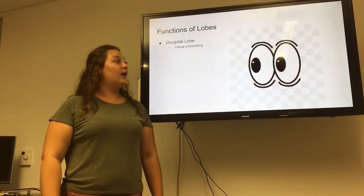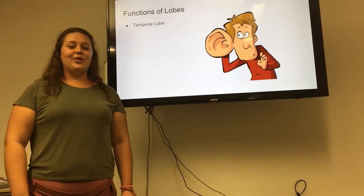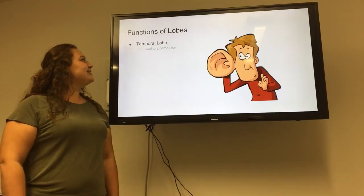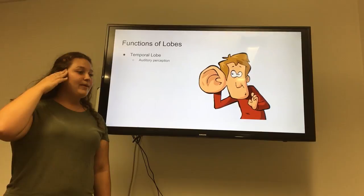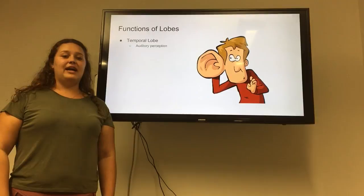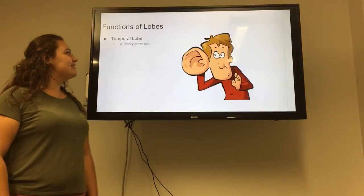The next lobe we're going to talk about is our temporal lobe. The temporal lobe is our auditory perception. The best way to remember this is also by location — temporal is right here, right next to our ears. We use that to hear our alarm clocks to make sure we are on time for all of our classes and assignments.